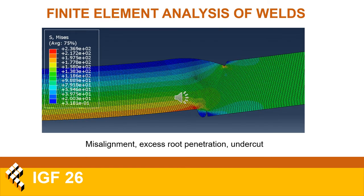This is another case with misalignment, excess root penetration, and an undercut. The stress distribution is similar to the first misalignment case, though stress magnitudes in this case were somewhat lower.